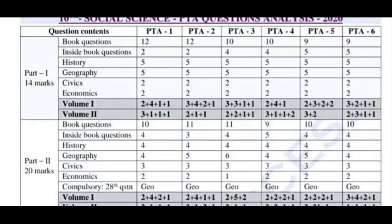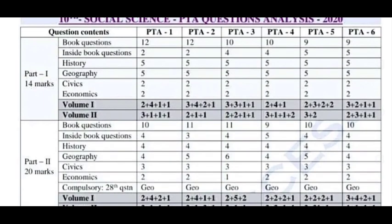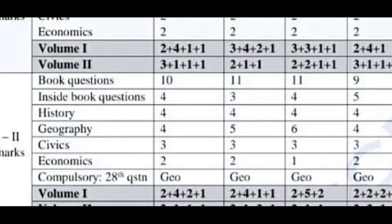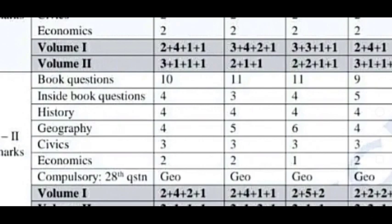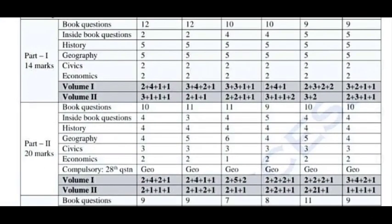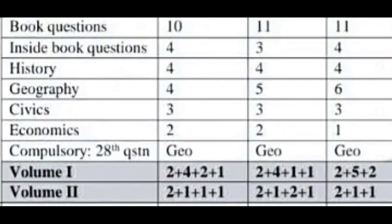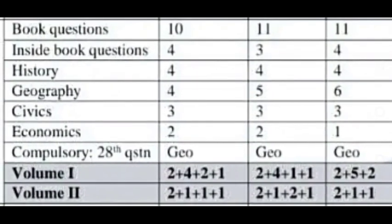That's the PTA 2 pattern. According to PTA 2, there are 14 questions. In book back there are 14 questions, and in book inside there are 3 questions. There are 4 questions across subjects. If you look at history, geography, and economics, you can follow up on this pattern. If you look at compulsory questions, you can identify them in the 10th social science paper.